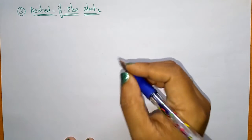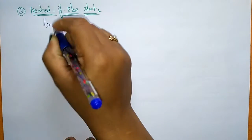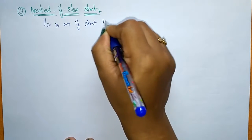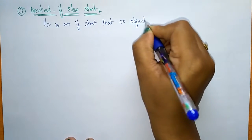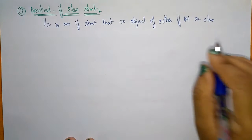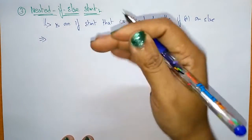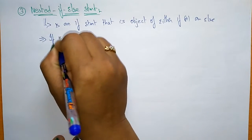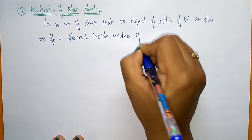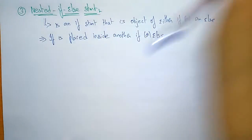What is nested if? Nested if is an if statement that is the body of either an if or an else. So if is placed inside another if or else, you call it a nested if. Nested means more than one if. If more than one if or else statement is present, then you call it a nested if-else. Let me write the syntax for this.